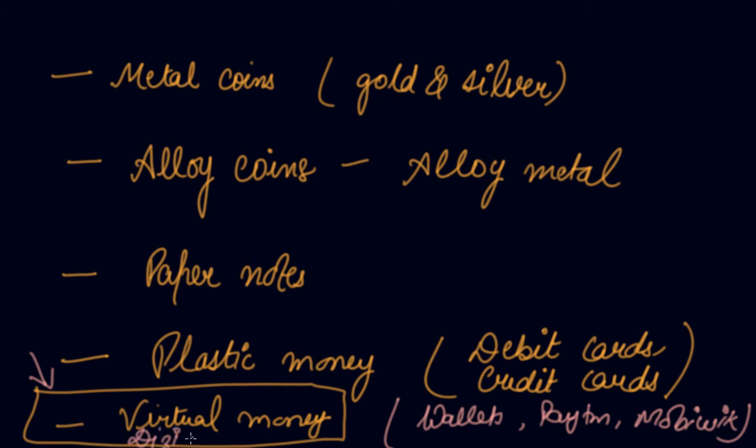Your Paytm wallet, your Mobikwik. You are using money, you are exchanging money with the services. So we can term it as a virtual money or digitalized money. Digitalization which is going on in India these days. So this is how evolution of money, this is how the history of money is. First came the metal coins that is gold and silver, then the alloy coins, and then your paper notes, then your plastic money, and now you have digitalized or virtual money with you.